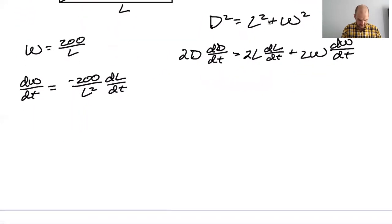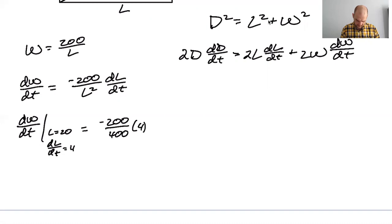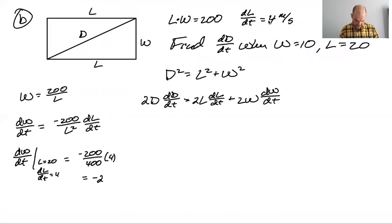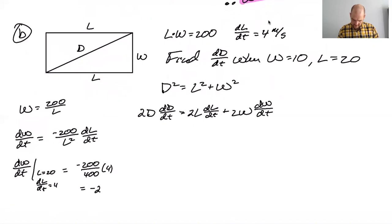So dW/dt such that L equals 20 and dL/dt equals 4 is negative 200 over 400 times 4, which is negative 2. All right. dW/dt is negative 2. W is 10. I think we're good to go. I think we know everything here, except I don't know what D is,